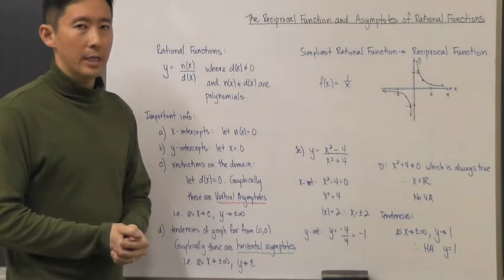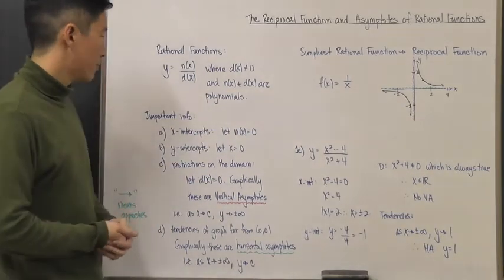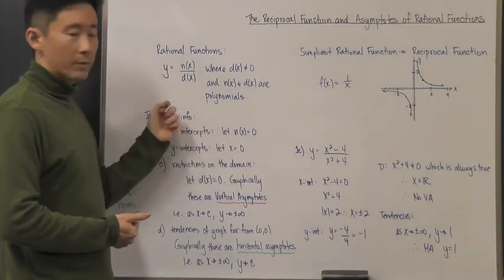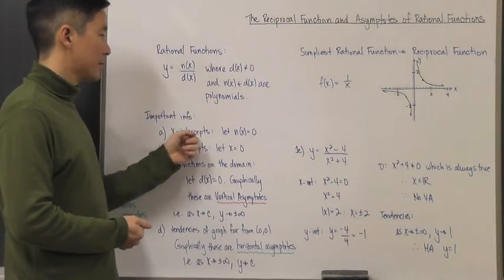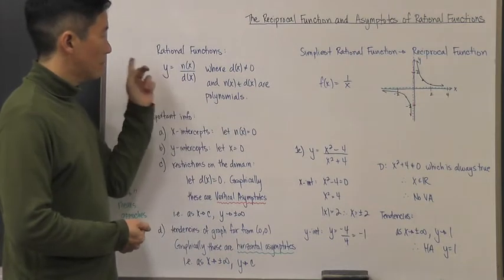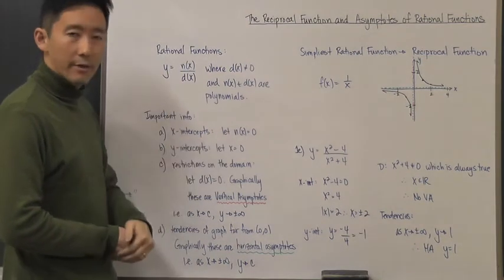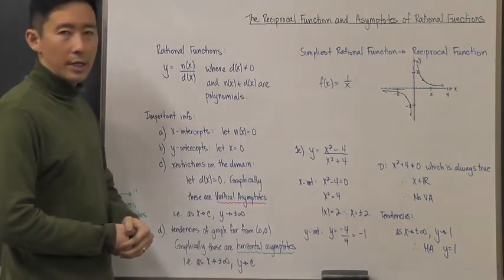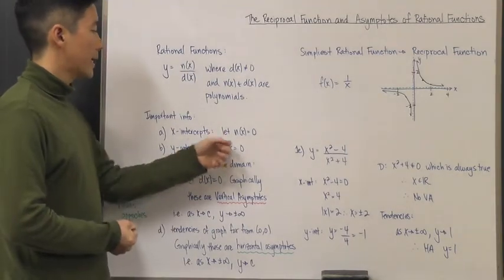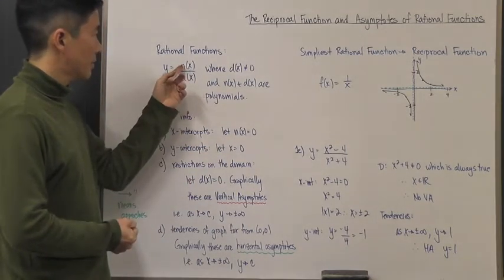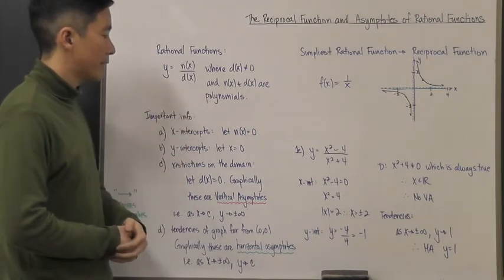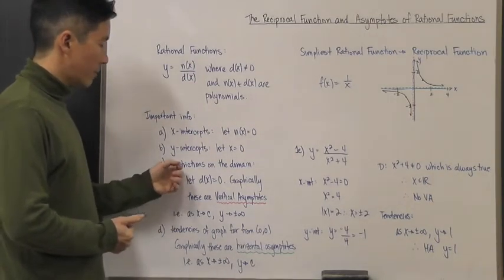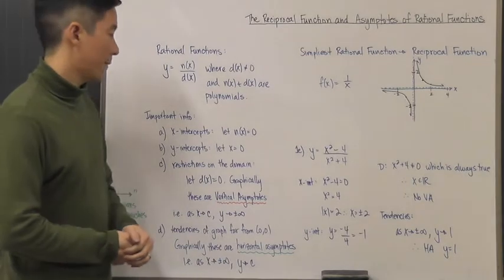Some important information to keep in mind: if we want to find the x-intercepts, we let y equal zero, which is the same as letting n(x) equal zero — just the numerator. If we want to find the y-intercepts — where the function crosses the y-axis — we let x equal zero, substituting zero into both the numerator and denominator to get that crossing value.